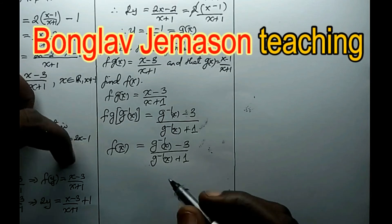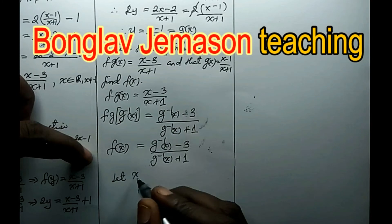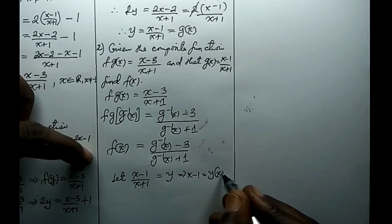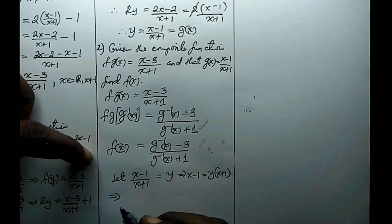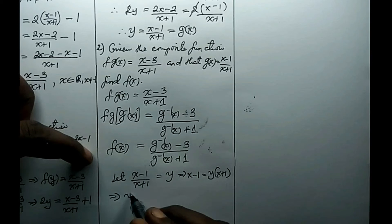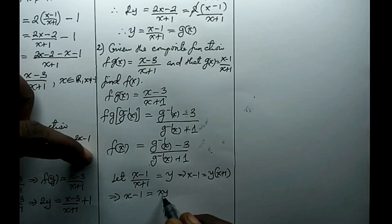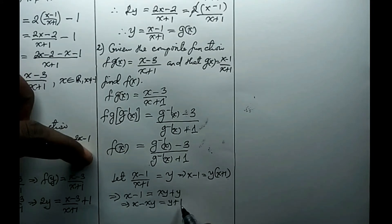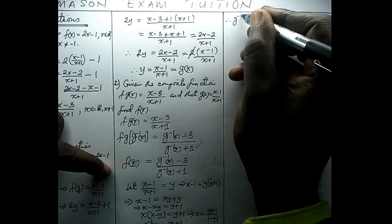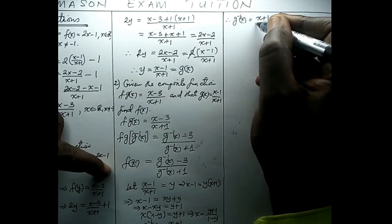To find g inverse of x, let g itself — which is x minus 1 all over x plus 1 — equal some y. So x minus 1 equals y times x plus 1. Our aim is to make x the subject. So x minus 1 equals xy plus y, giving x minus xy equals y plus 1. Therefore x equals y plus 1 all over 1 minus y, and so g inverse of x equals x plus 1 all over 1 minus x.